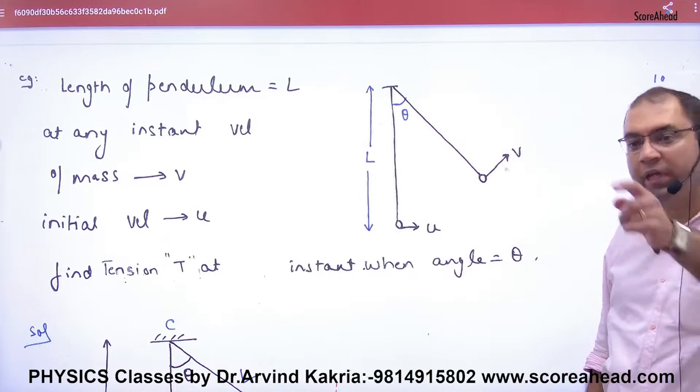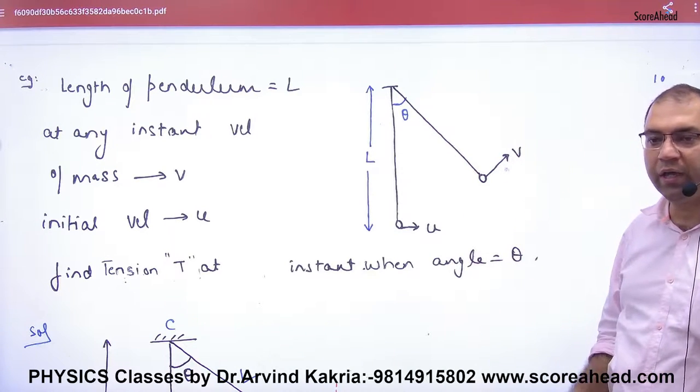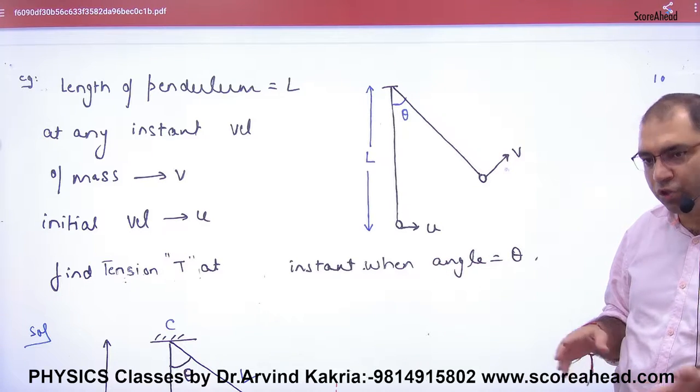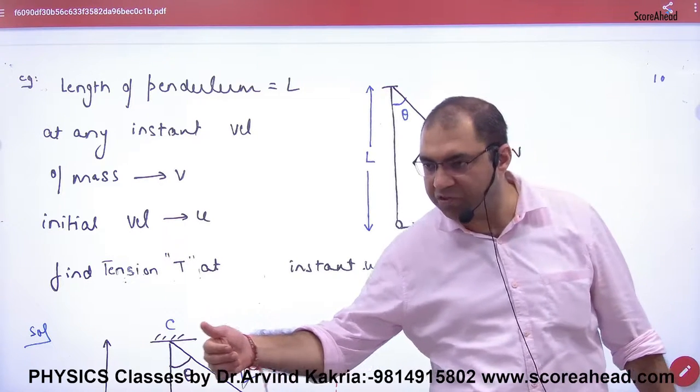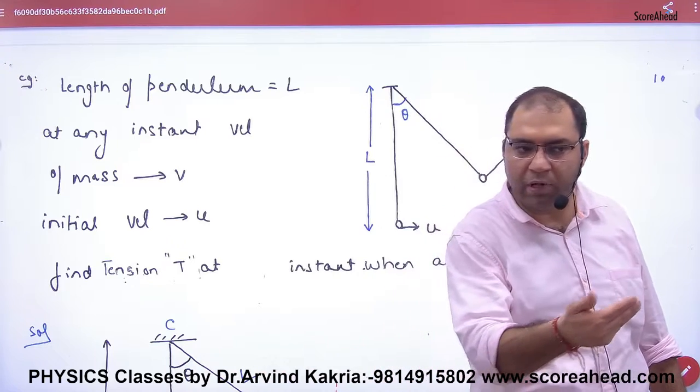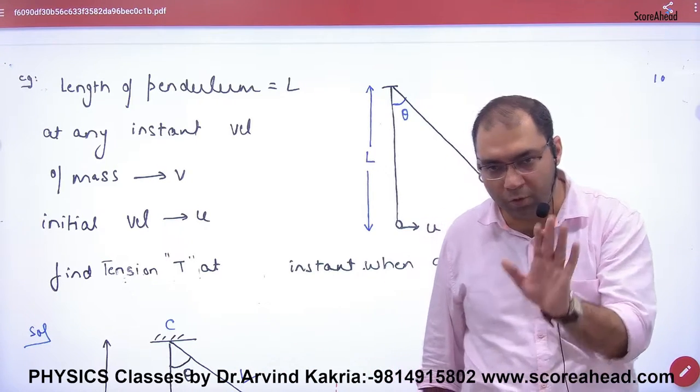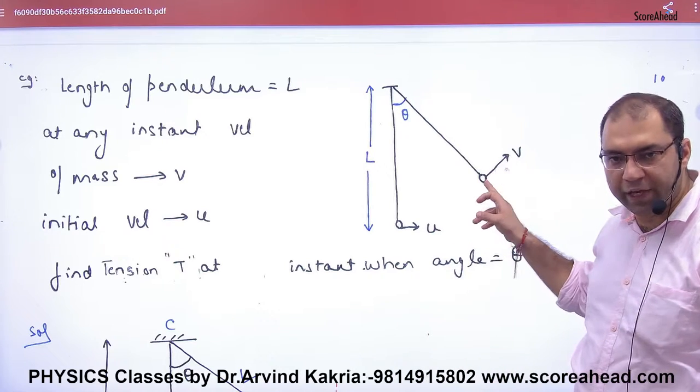At any instant, what is the angle? Theta. What is the velocity at that instant? V. The velocity decreases as it goes up. At the extreme point, velocity becomes zero. The question is: when the velocity is v, what will be the tension?